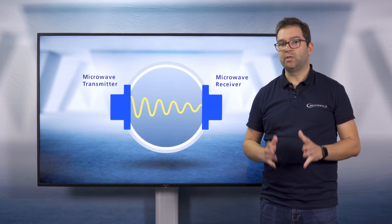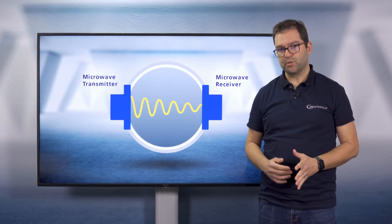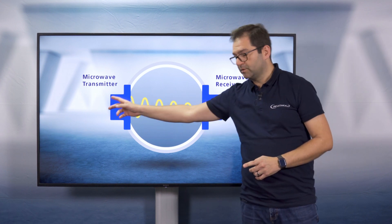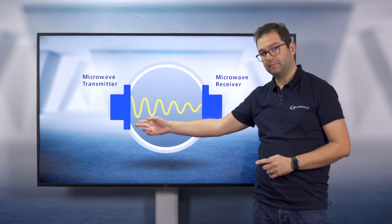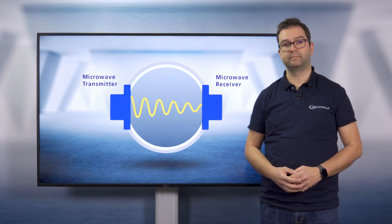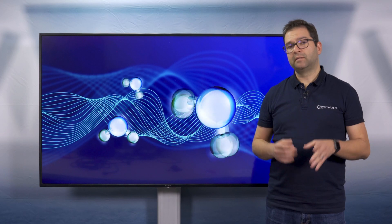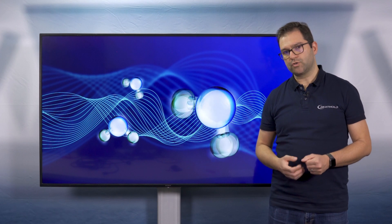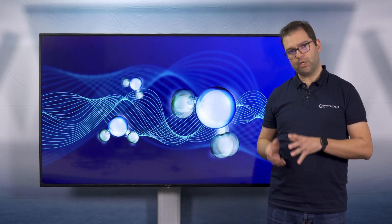Microwave measurement uses the transmission technology where microwaves are directed from the transmitter through the material to the receiver. Microwaves pass through the material interacting with the free water molecules. These water molecules undergo a certain rotation or an oscillation depending on the orientation of the electromagnetic field.